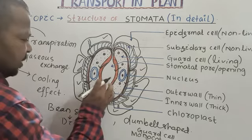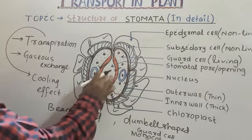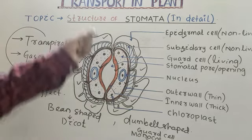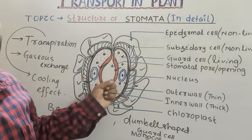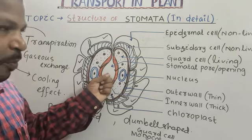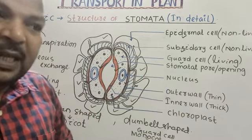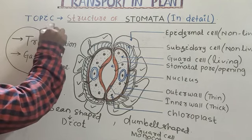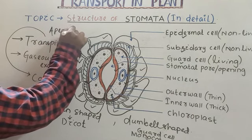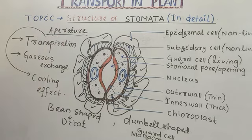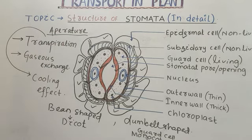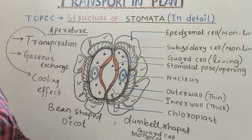There is a large opening in the center through which water evaporates in vapor form. This opening is called stomatal pore, or stomatal opening, or stomatal aperture — these are alternate names for the same thing — through which water leaves out.